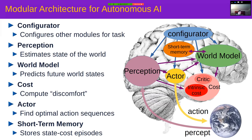Think of the world model not as a completely generic model but as one you can configure to be appropriate for a particular situation or problem. The configurator primes the perception system to detect the right things, primes the world model to make relevant predictions, and configures the cost function to achieve an appropriate sub-goal. It's a bit like a music director. I must admit I don't know how to build a configurator, but for the rest I have some ideas.